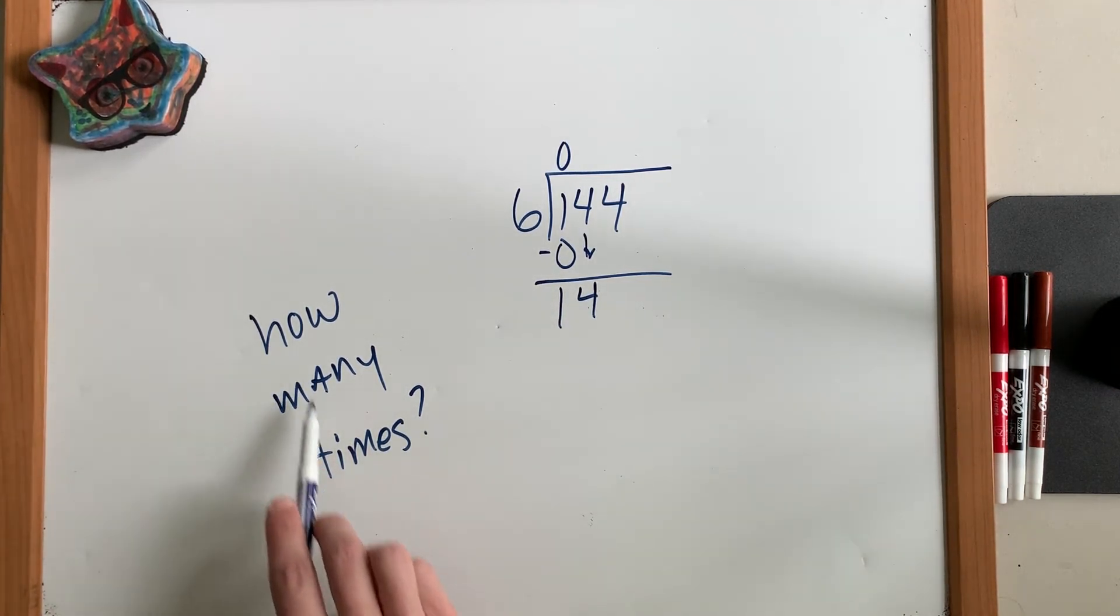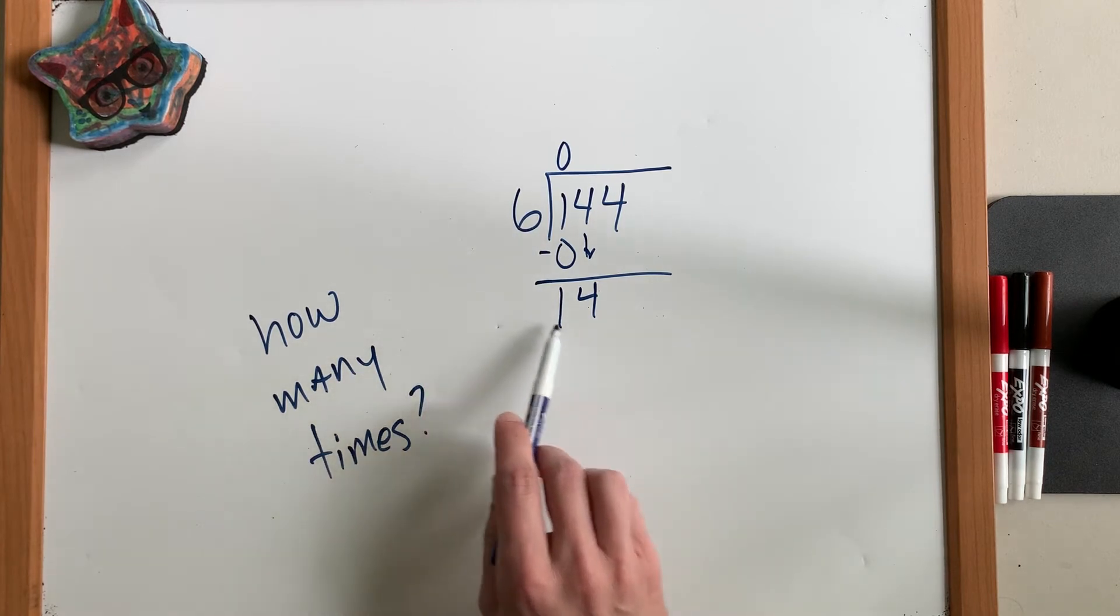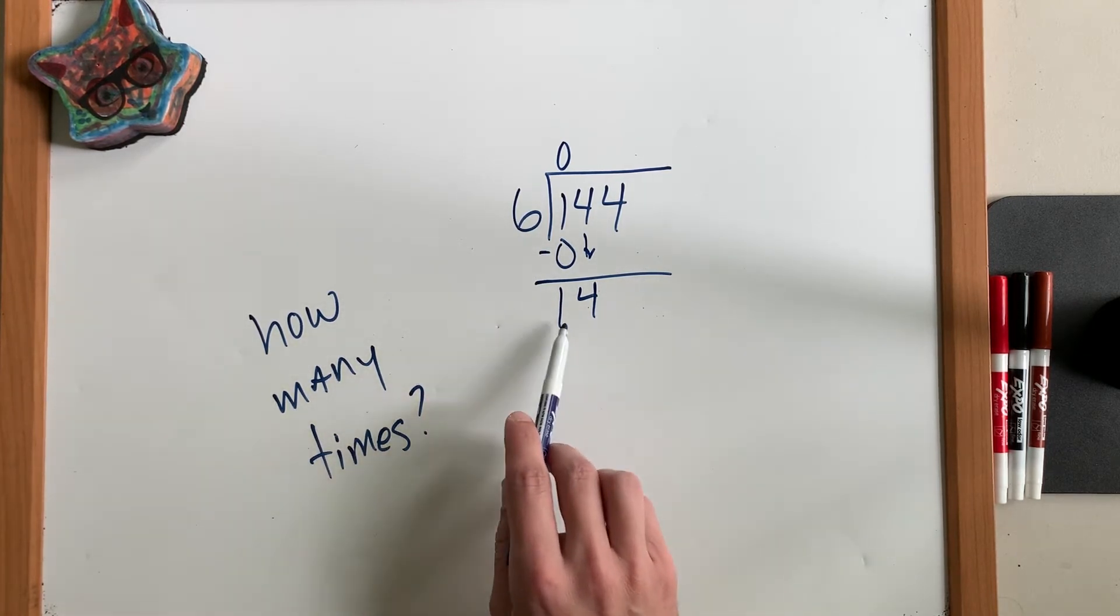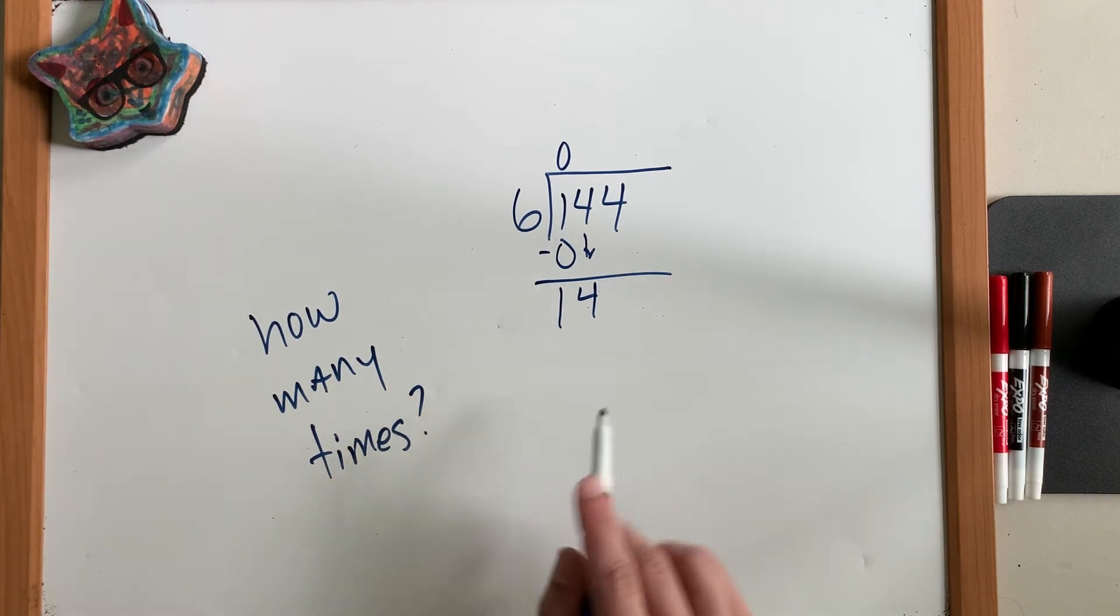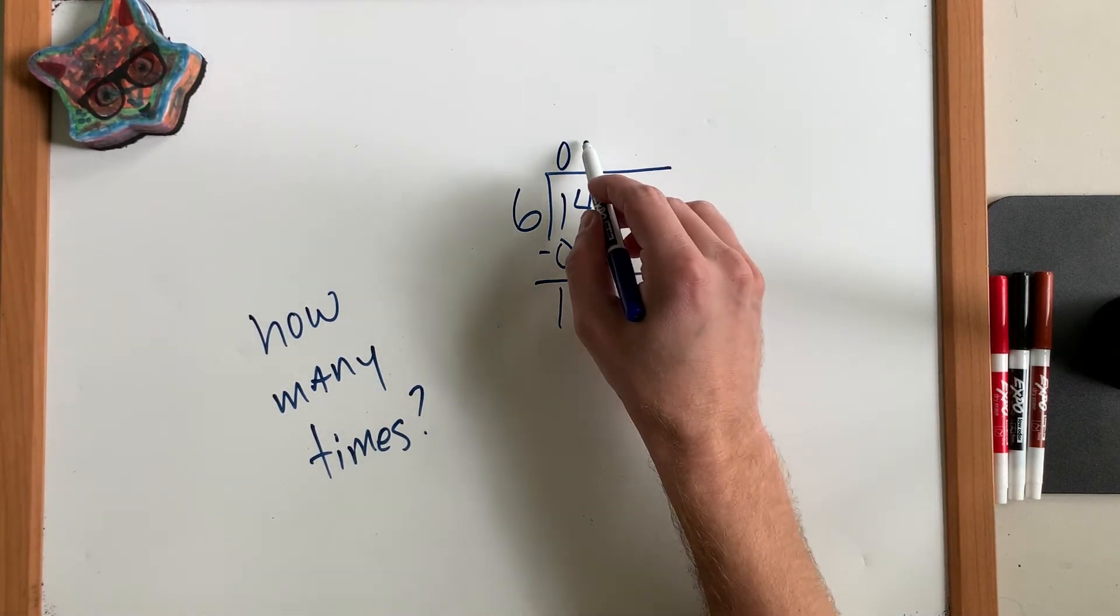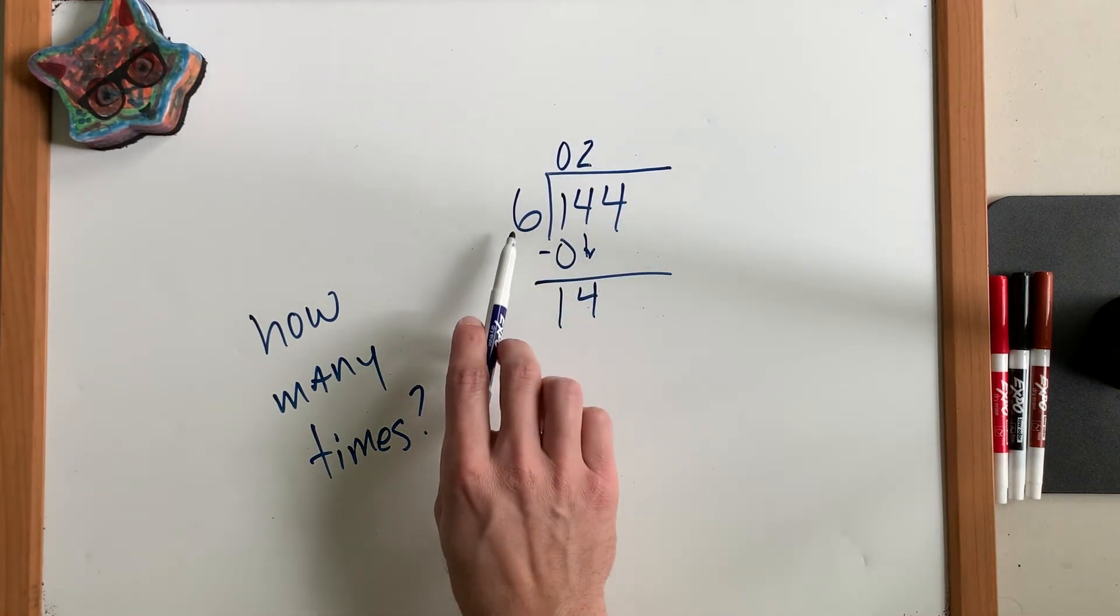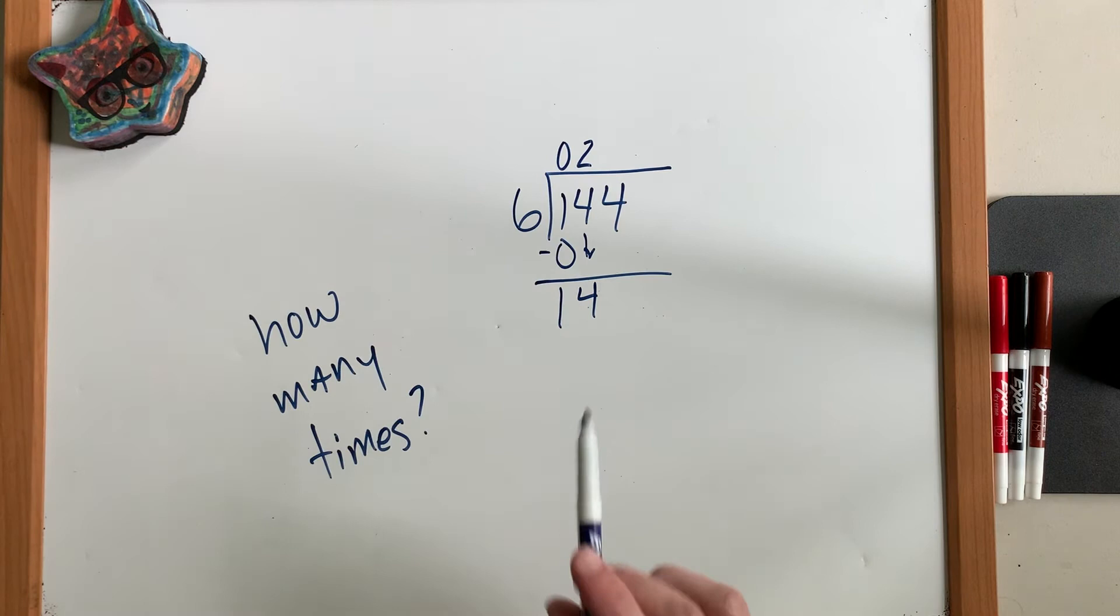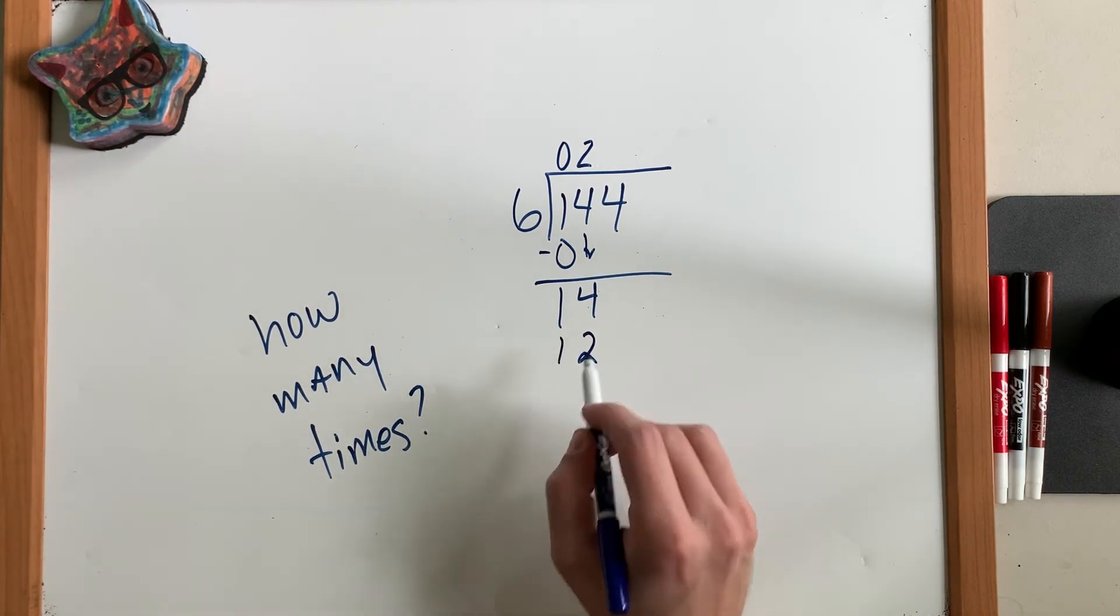And we ask, how many times does 6 fit into 14? Well, 1 of them is 6, 2 of them is 12, 3 of them is 18. That's too much. We can't have 18. So we're going to go 2. 2 6s can fit into 14. And if you multiply these, 6 times 2 is 12. Let's see what we have left over. We have 2.